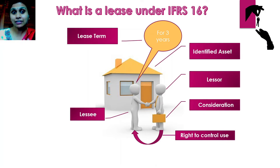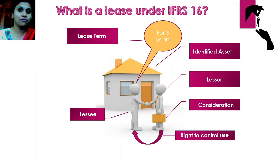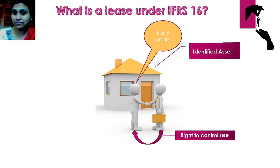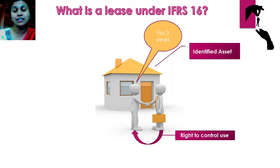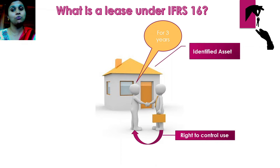Now under this standard, to assess whether a contract qualifies as a lease or not, there are two components that we focus on: one is identified asset and the second is right to control use. This entire video will be focused on the criteria that an asset needs to qualify to be considered an identified asset. I will take up right to control use in another video.